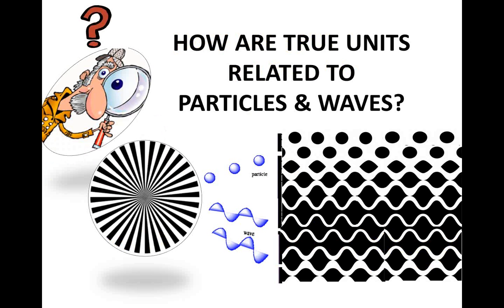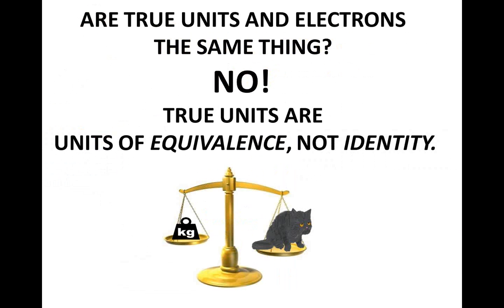For calculations involving elementary particles, the true unit is set equal to one. When defined in this way, the true unit becomes the standard of quantum measurement, and the substance of all elementary particles is then measurable in whole number multiples of true units.